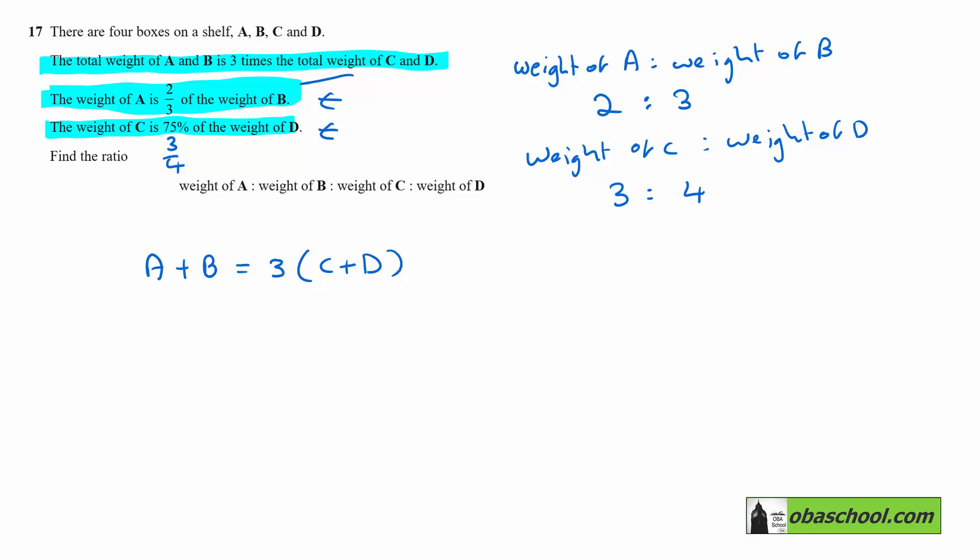So, let's use this fact again and say that A is two-thirds B, and then we have plus B, is three times. Now, I'd really like, because they're in the middle, to get a relationship between B and C. If C is 75%, or three-quarters of the weight of D, that means that D would be the other way up, four-thirds of the weight of C. So, we've got C plus four-thirds of C.